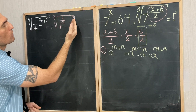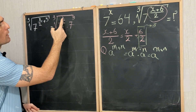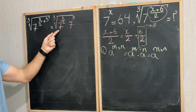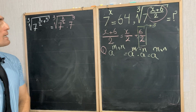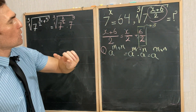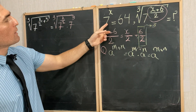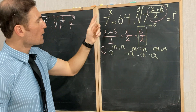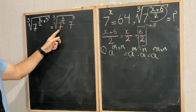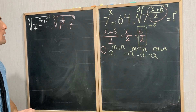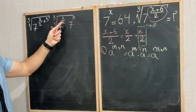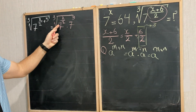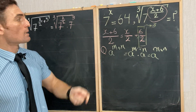We know the value of 7 to the power of 3, but what about 7 to the power of x over 2? We don't have the value of x, so we don't directly have 7 to the power of x over 2. But the question tells us that 7 to the power of x is 64. We need the value of 7 to the power of x over 2 — how can we find it using 64?